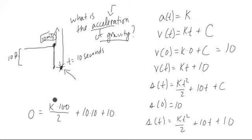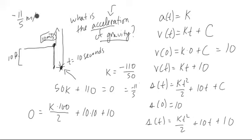This enables us to solve for k. In particular we have 50k plus 110 is equal to 0. So we know that k is equal to negative 110 over 50, which is negative 11 fifths. So it looks like the acceleration of gravity is negative 11 fifths meters per second per second.